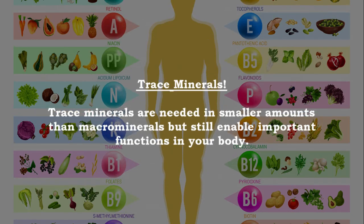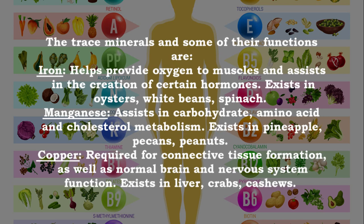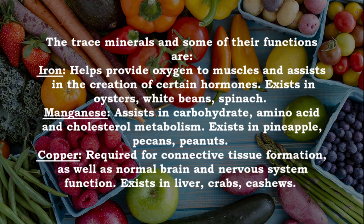Trace minerals are needed in smaller amounts than macrominerals but still enable important functions in your body. Iron — helps provide oxygen to muscles and assists in the creation of certain hormones; found in oysters, white beans, and spinach. Manganese — assists in carbohydrate, amino acid, and cholesterol metabolism; found in pineapple, pecans, and peanuts. Copper — required for connective tissue formation as well as normal brain and nervous system function; found in liver, crab, and cashews.